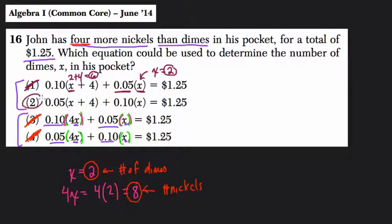We need choice 2 here. And just to verify, we have 2 for x. Now, what does x represent? Well, because x is being multiplied by 0.1, the value of a dime, now in this equation, x represents the value of a dime. So we have 2 dimes, or 20 cents, and 2 plus 4, or 6 nickels. So 6 nickels and 2 dimes, that's 4 more nickels than dimes.